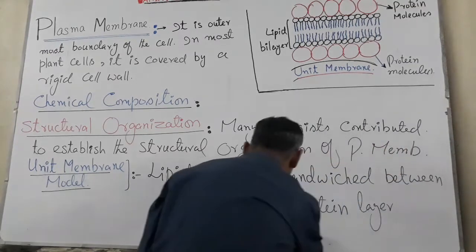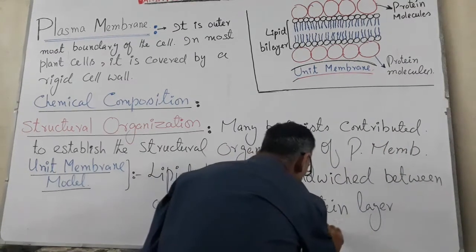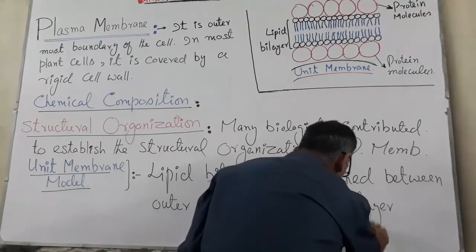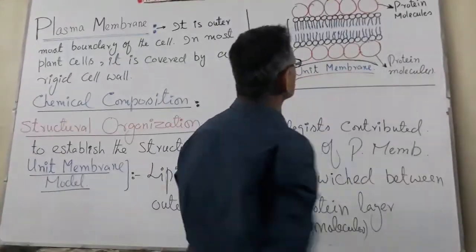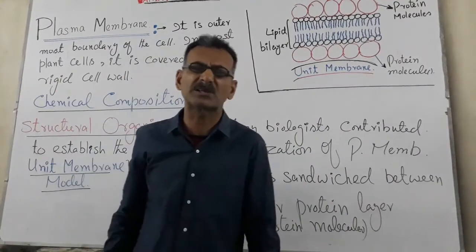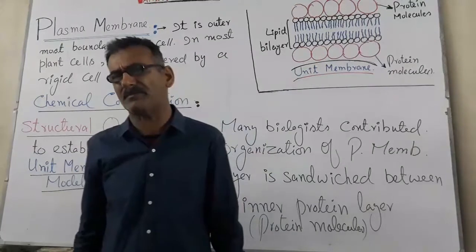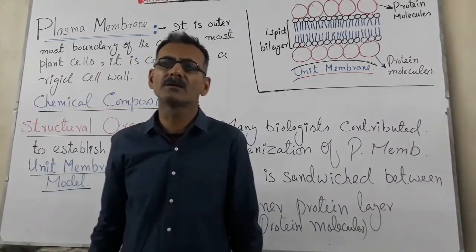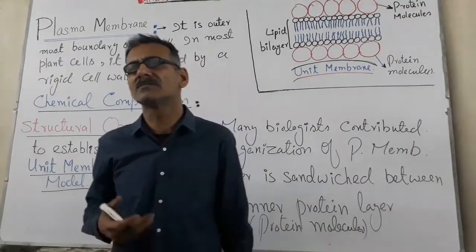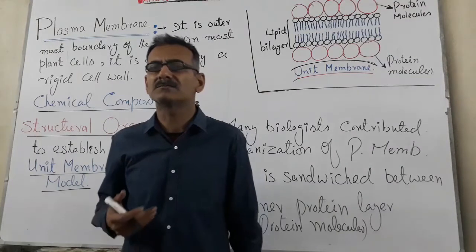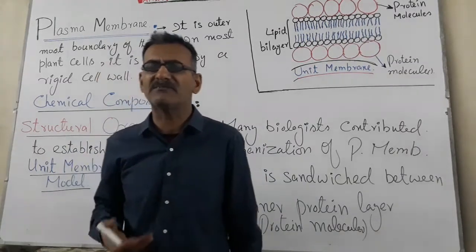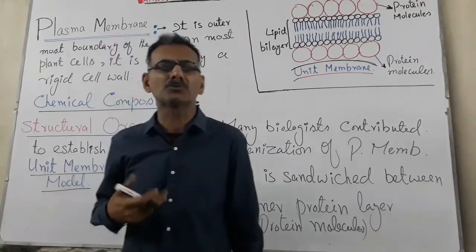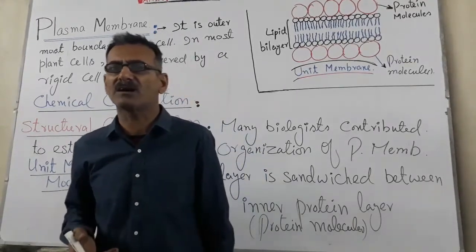Protein molecules are present at the outer side and inner side of the lipid bilayer. This is the simple model of structure for the plasma membrane. In all animal cells as well as in bacteria, the plasma membrane — which is a selectively permeable membrane — is present as a barrier and the outermost boundary of the animal cells.